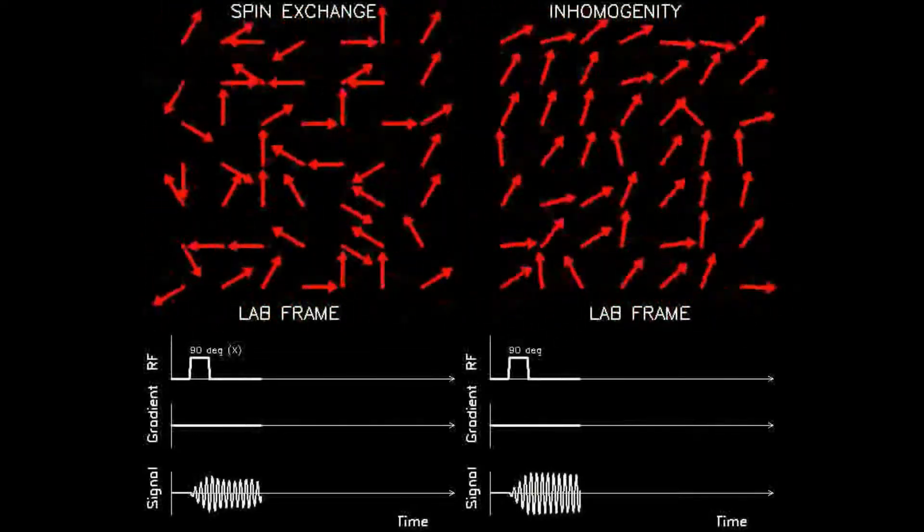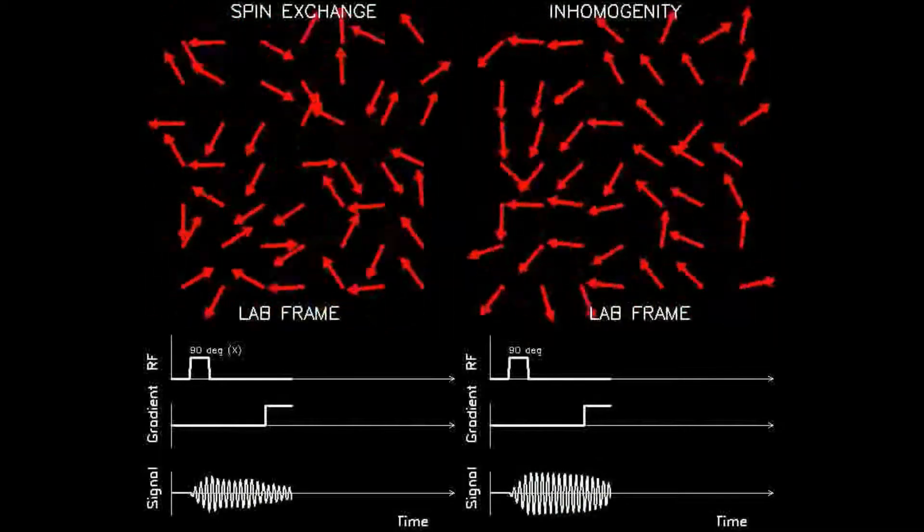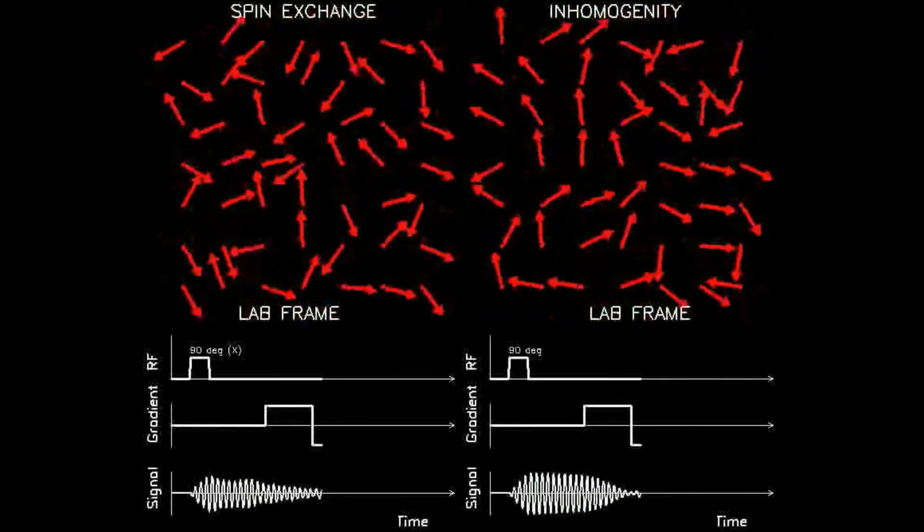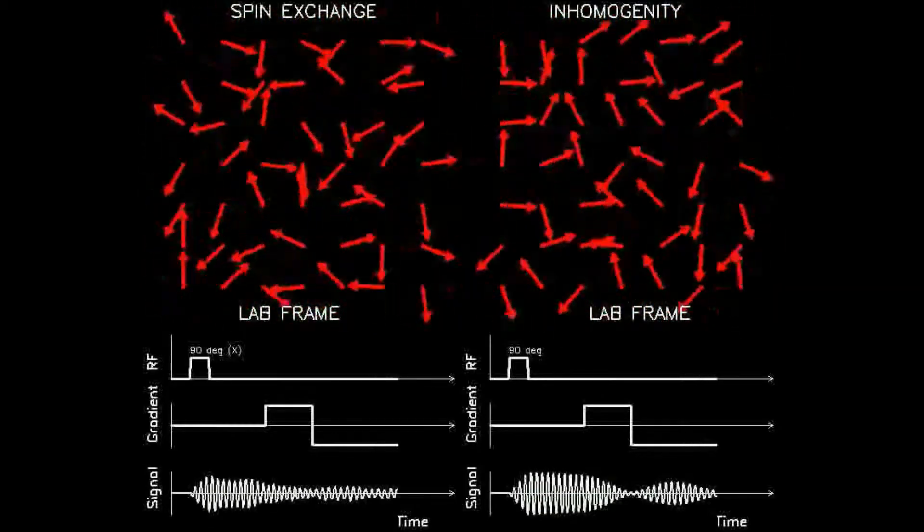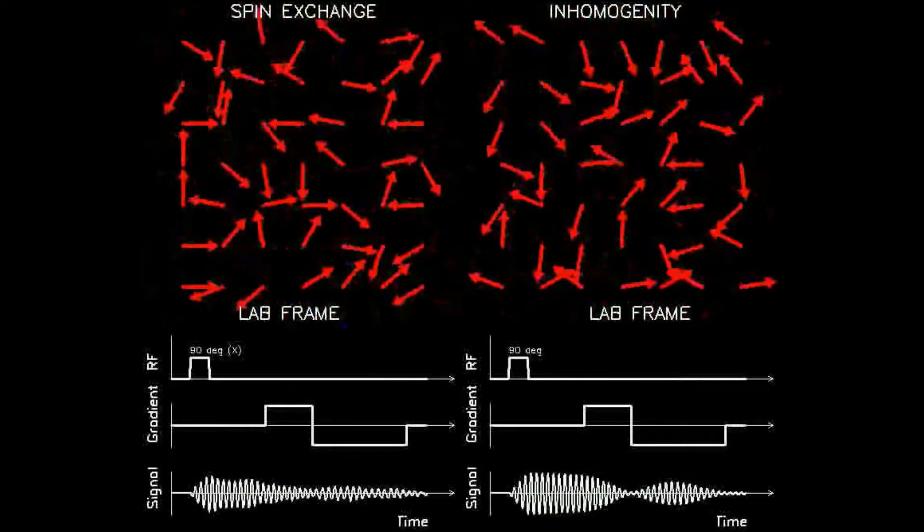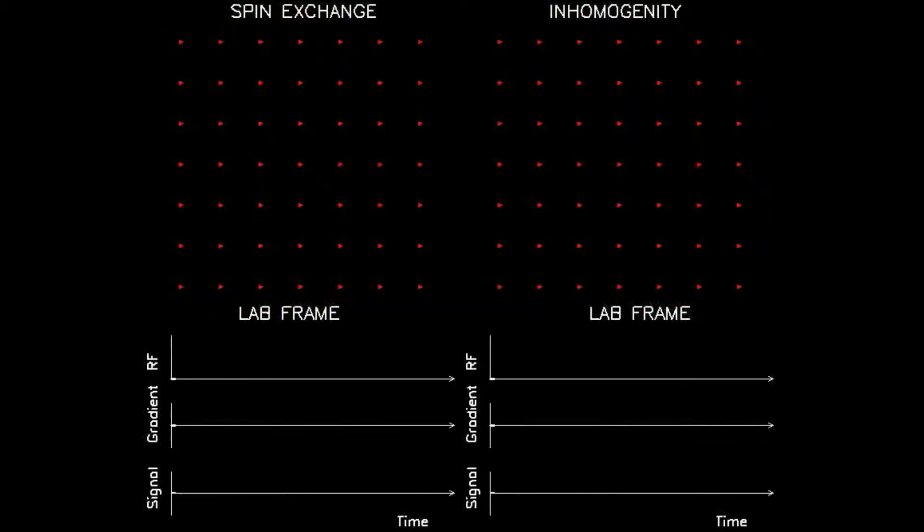This is followed by the application of a special magnetic gradient. Instead of applying a 180 degree radio frequency pulse as in the previous spin echo animation, gradient echo relies on the application of magnetic gradients to achieve a similar effect.